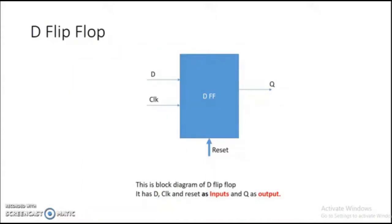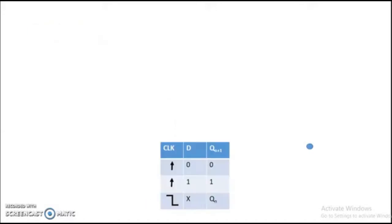This is the block diagram of the D flip-flop, which has D, clock, and reset as inputs and Q as the output. This flip-flop can be either positive edge triggered or negative edge triggered. The truth table of the D flip-flop for a positive edge triggered case shows that during the positive edge transition only, the output will be same as D. For all other clock states, the output remains as the previous output and does not change.